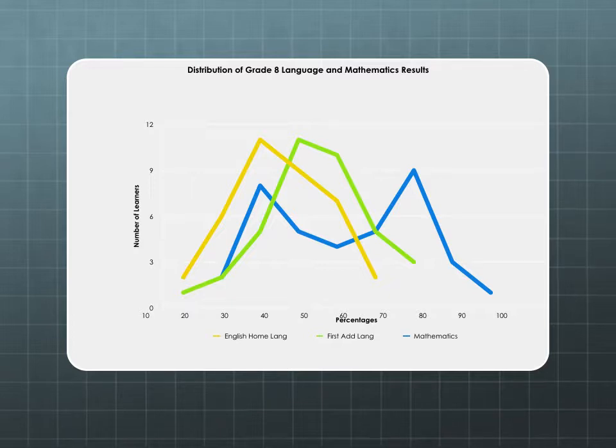Here if you have a look, you've got a comparison of your two languages, your home language and your first additional language, and your maths. It's the same group of learners and the curves look very different. The bell curve is not going to give you the answers, but it is going to raise a red flag where there could be a problem.